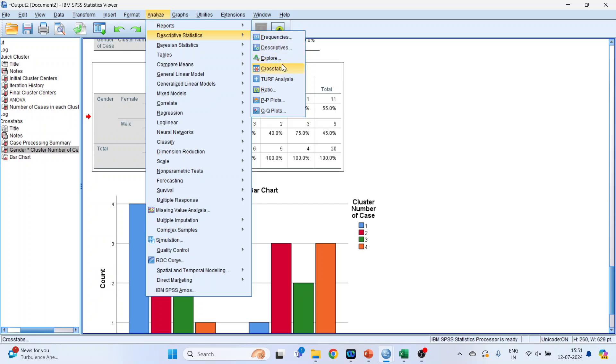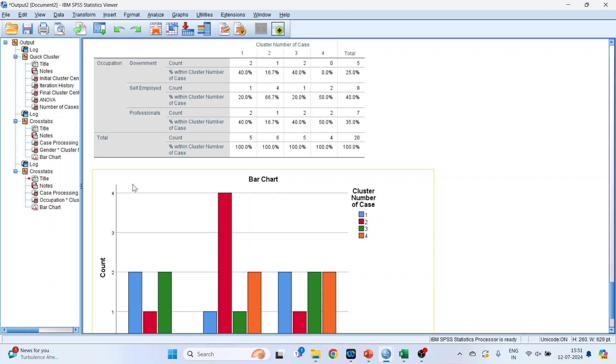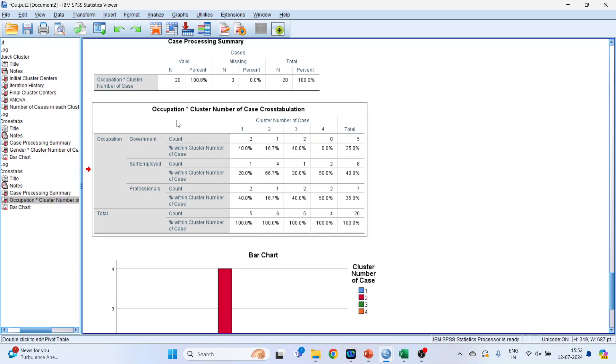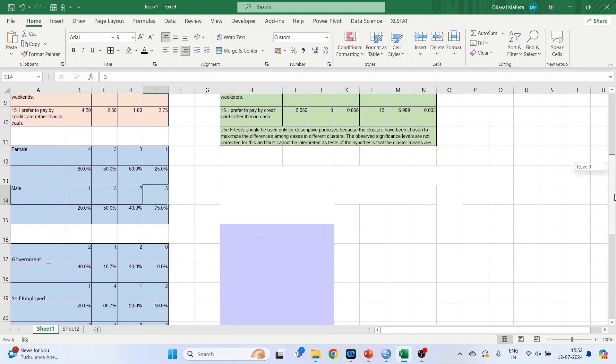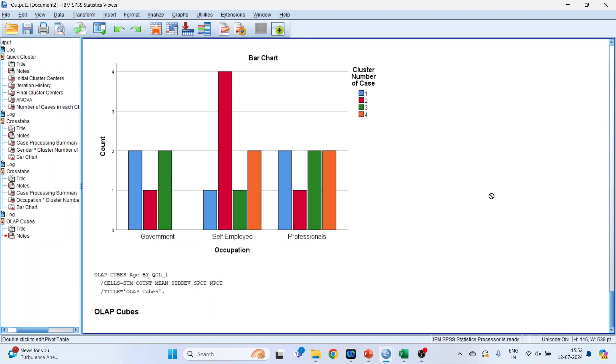Analyze, descriptive, cross tabs. Remove gender and transfer occupation here. Click OK. So now this will give me the composition of cluster one, two. I will copy this thing. Right click here in Excel. This will give me the demographic classification according to occupation with the percentages for each cluster.